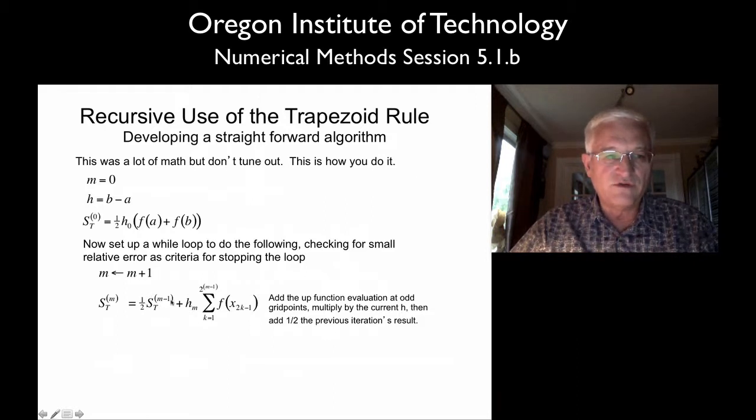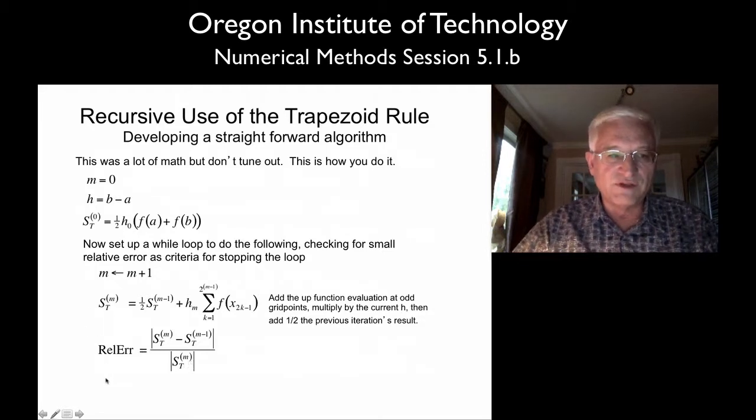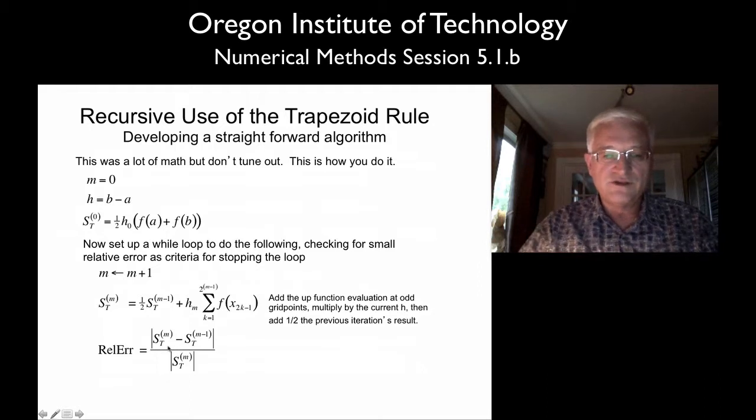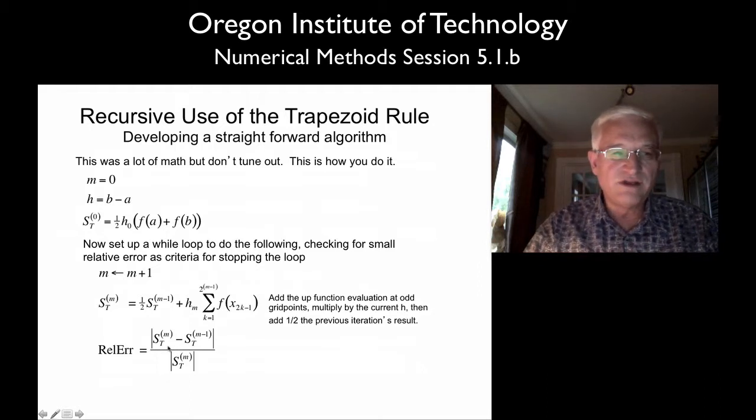And we're going to have to keep track of the old sum so that we can create the new one. We'll need to create this relative error as a stopping rule, and then we'll stop this loop when this relative error gets small enough. So I haven't given you as much pseudocode as usual.